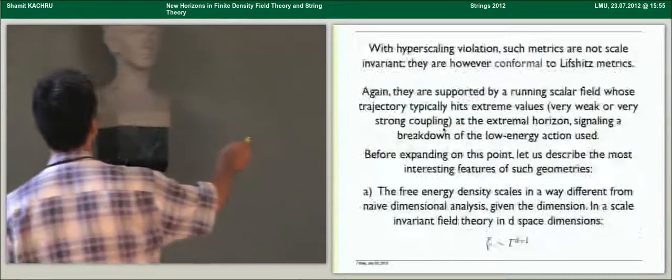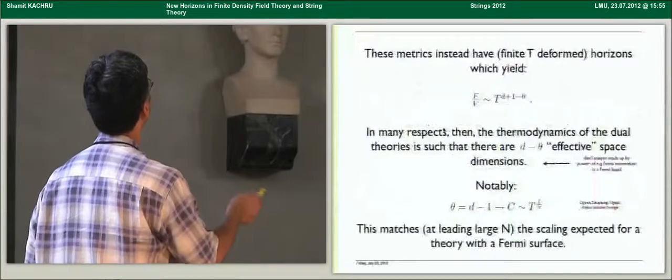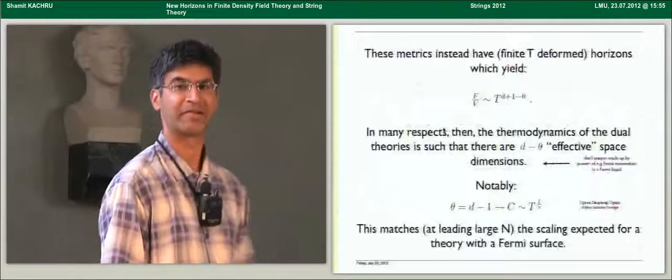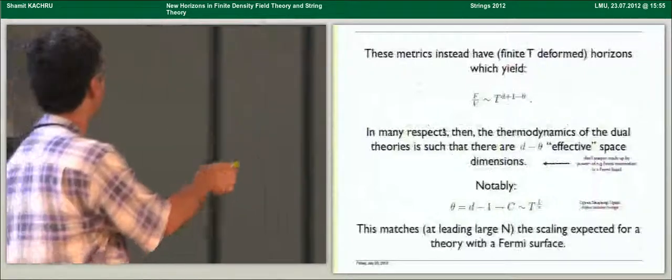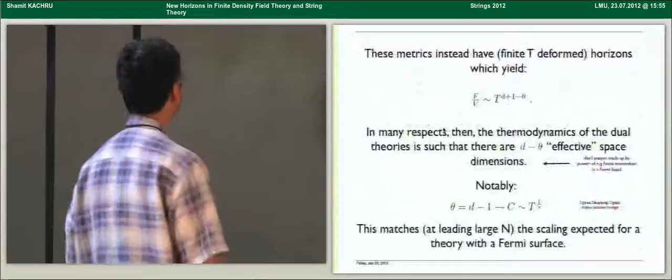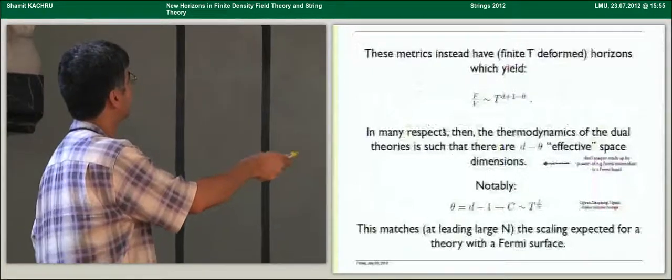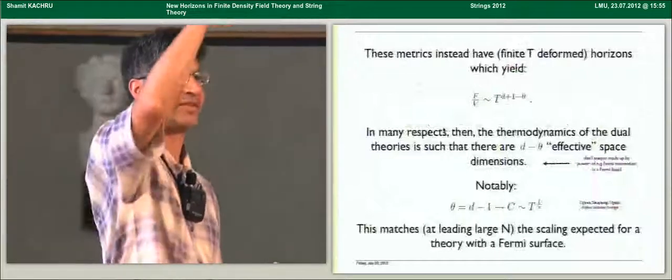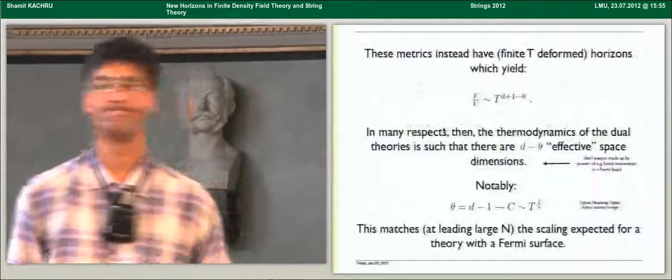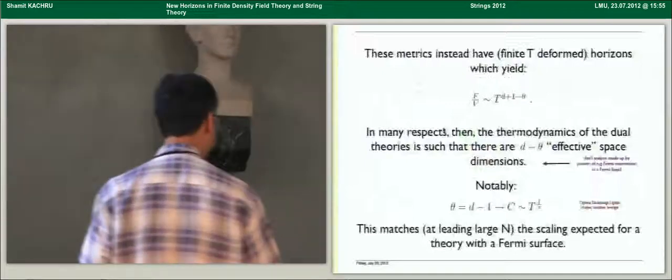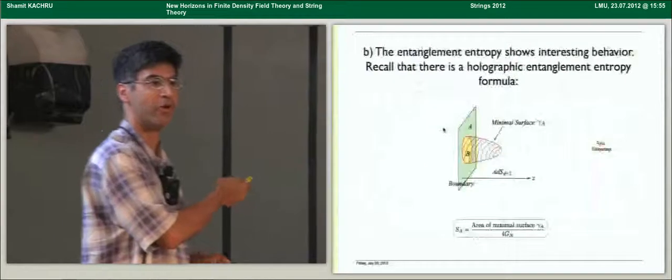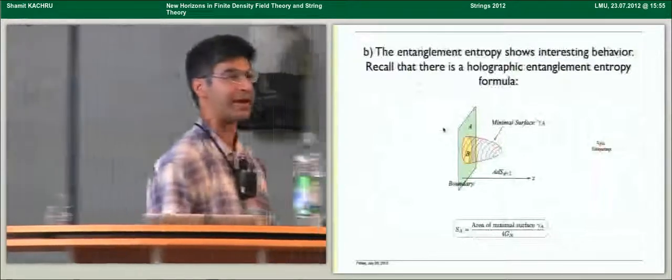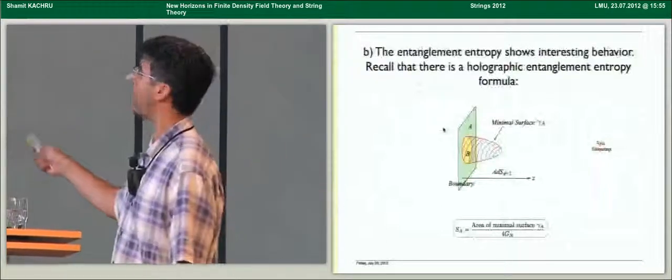Notably, precisely when this theta is D minus 1, which means that the theory is behaving as if it has one effective space dimension in this sense, you get a specific heat that goes like T if Z is 1 and T to the 1 over Z if there's dynamical scaling. This was noticed by Takenagi et al and expanded upon by Satchitov and his collaborators. And the interesting fact here is that this specific heat matches that leading large N for the leading large N response, the scaling that you'd expect for a theory with a Fermi surface. Because in the presence of a Fermi surface, only the dimension transverse to the surface in momentum space really scales. Momentum along the surface cost very little energy. So the most interesting fact here is that this is a leading large N result. There's no probe. There's no 1 over N.